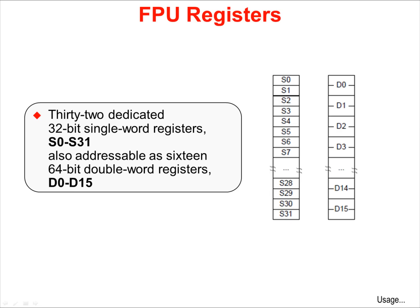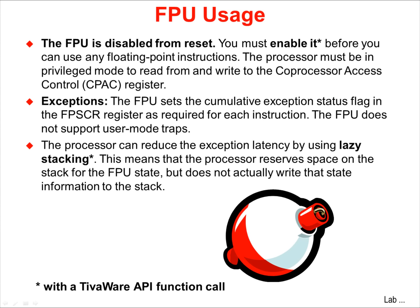The FPU is disabled from reset. You must enable it with a TivaWare API function call before you can use any floating point instructions. The processor must be in a privileged mode to read and write from the control register, and the API performs this function. The floating point unit sets the accumulative exception status flag in the exception register as required for each instruction. The floating point unit does not support any user type traps that you might write. The processor can reduce the exception latency by using a technique called lazy stacking, which is supported by a TivaWare API.